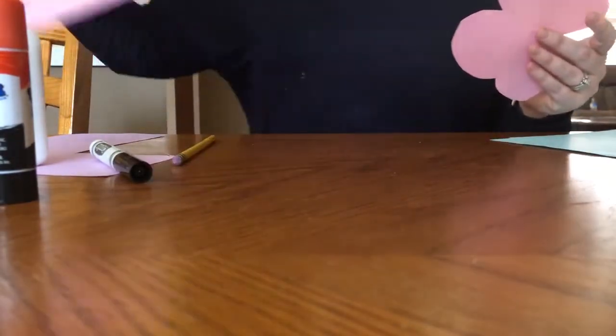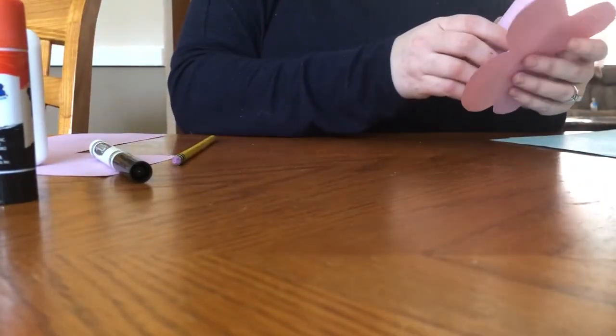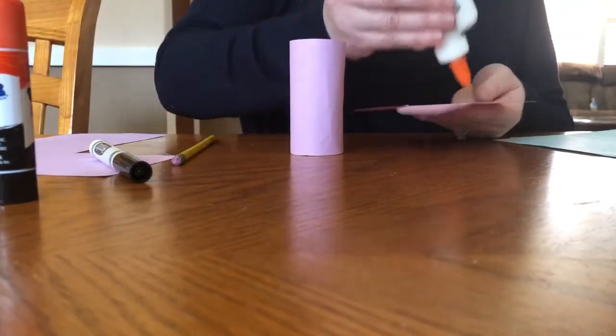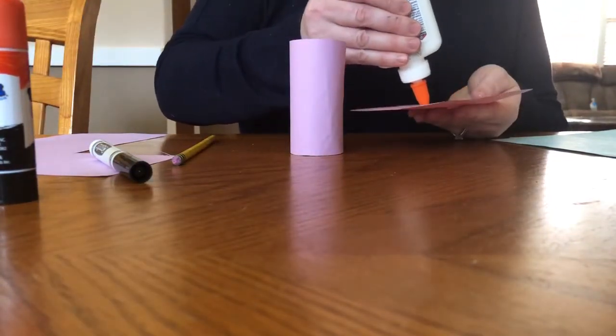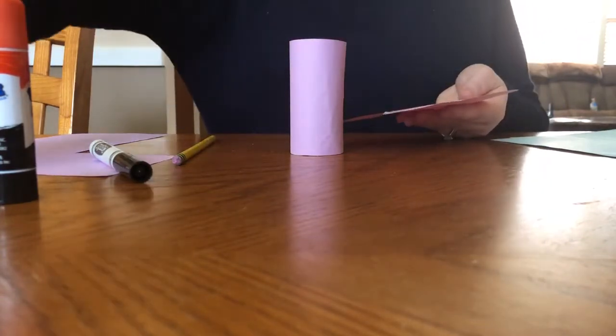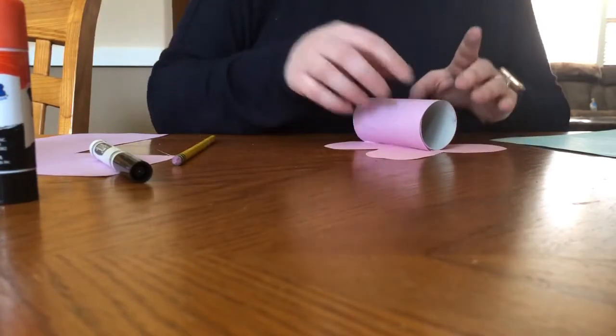Now once you have the wings cut out, you are going to add some glue to the wings. I'm going to add some glue straight down the back and I'm going to hold the toilet paper roll there for a second.